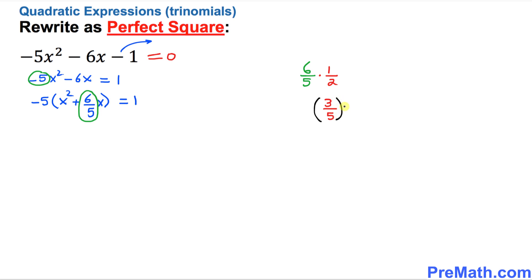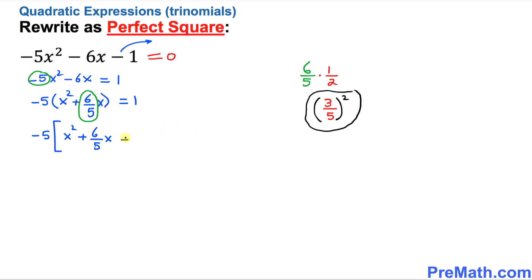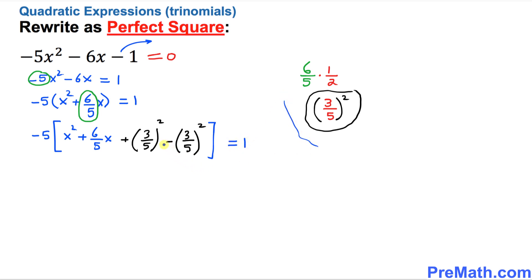The last step is to square this quantity, giving us (3/5)². So inside the brackets, I am going to add (3/5)² and also subtract (3/5)², so the value is unchanged. We now have: negative 5 times [x² + 6/5 x + (3/5)² − (3/5)²] equals 1.